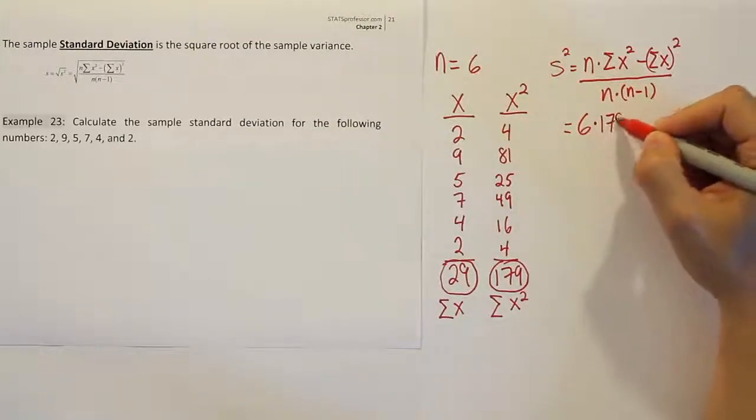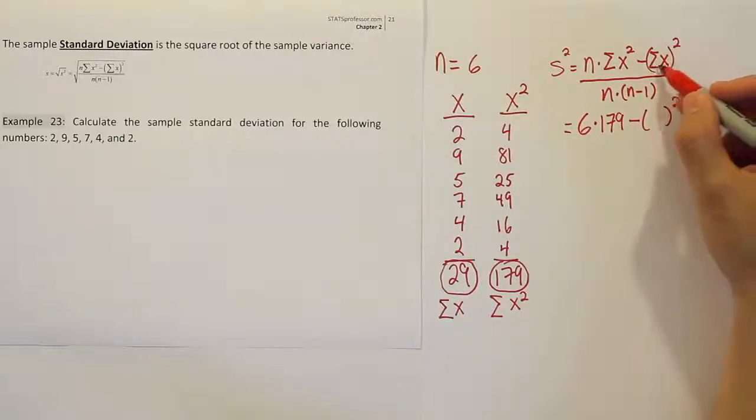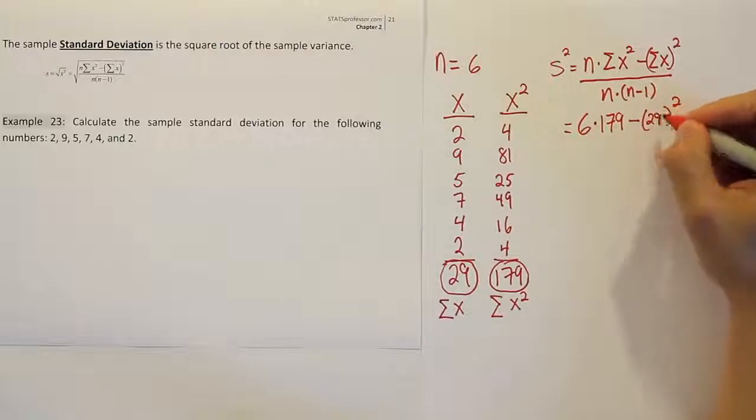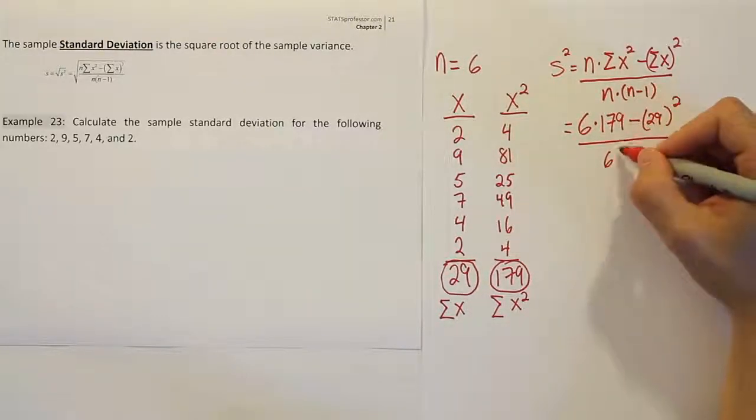So times 179 minus something squared. What's the something we're squaring? The sum of x, which is 29. And then we'll divide by n, which is 6, times n minus 1, which of course is 5.